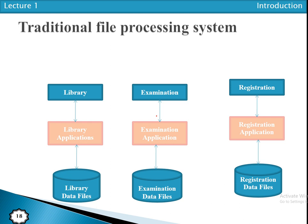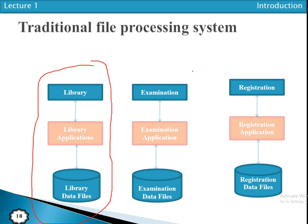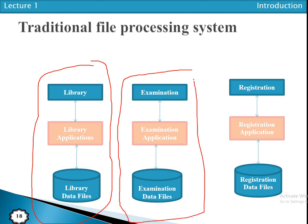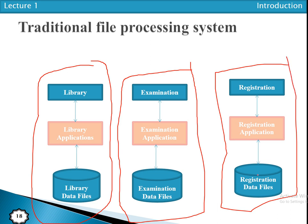In the traditional file processing system, each program or department has to manage its own data. For example, the library section manages its own data, the examination section has separate applications and stores data separately, and similarly the registration section has its own registration applications and data files.